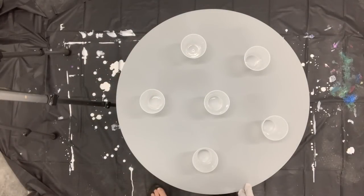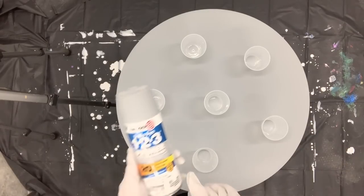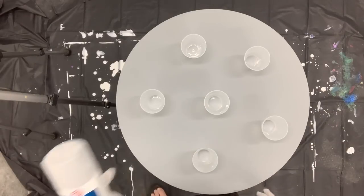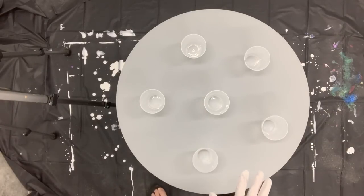Alright, so I've got the tabletop all ready to pour. What I've done since the first part of this video was to prime it with this Bullseye Zinsser 1-2-3 primer. I did lightly sand it and then spray painted that.